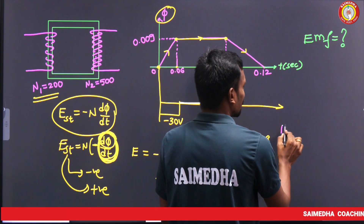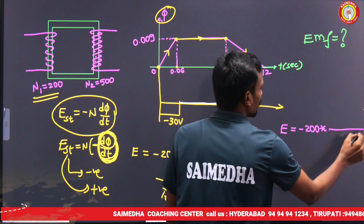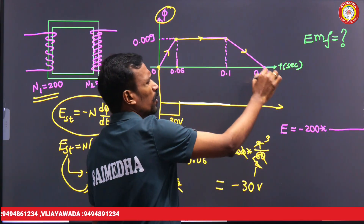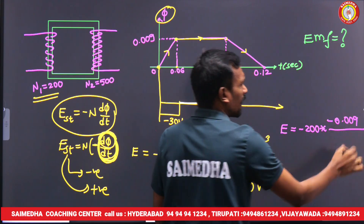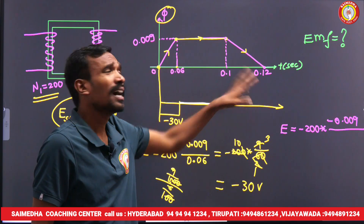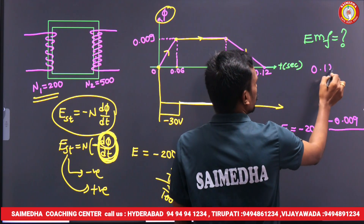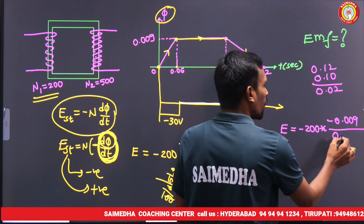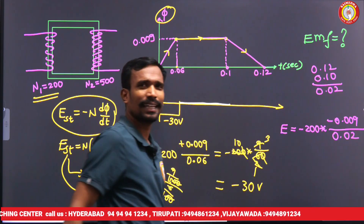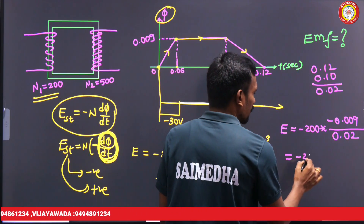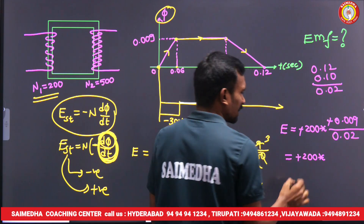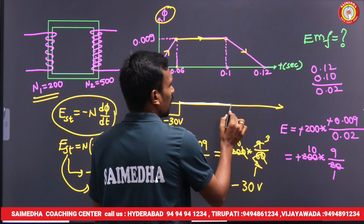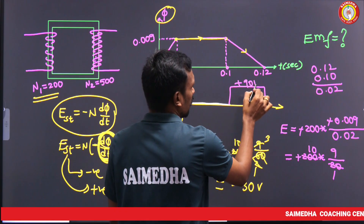Next, from here to here let's calculate. E = minus N into dΦ/dt. The change in flux is 0.009, reducing in manner, so it is negative. The change in time is 0.12 minus 0.1 = 0.02 seconds. That gives minus 200 into (9/1000 divided by 2/100). The minus-minus cancels, giving plus 90 volts for the primary.